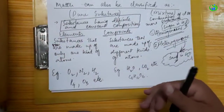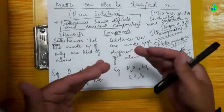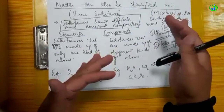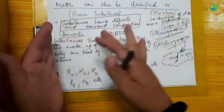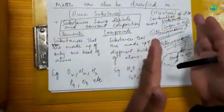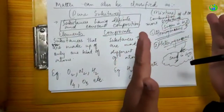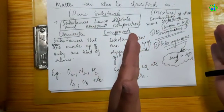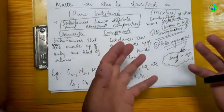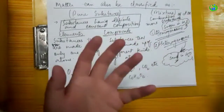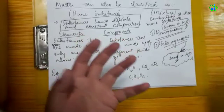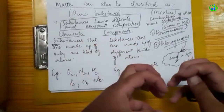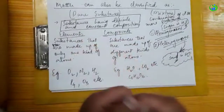This is the matter classification at the macroscopic level. Pure substances and mixtures. What is a mixture? A mixture is a combination of two or more substances.